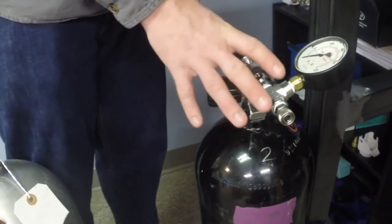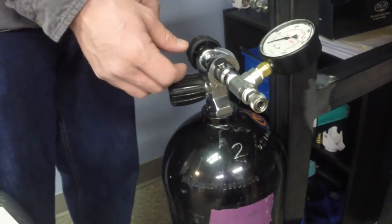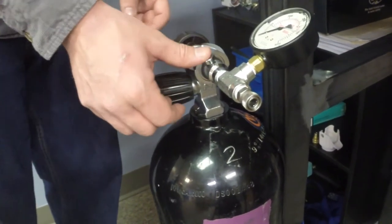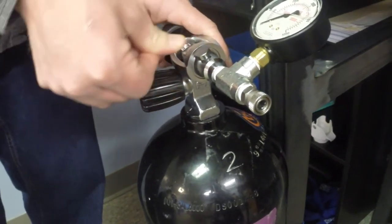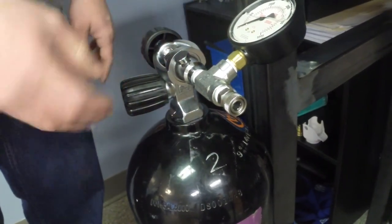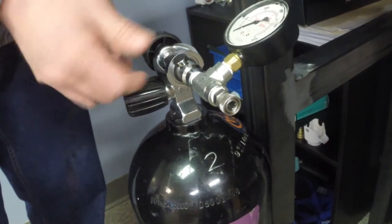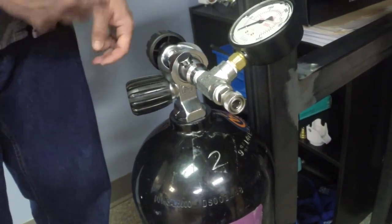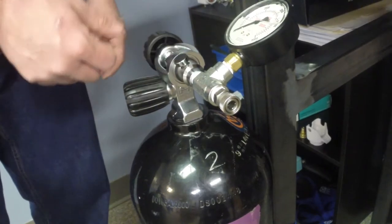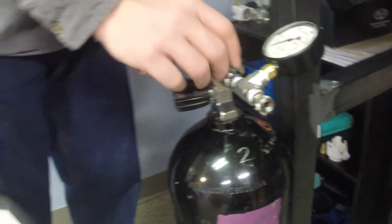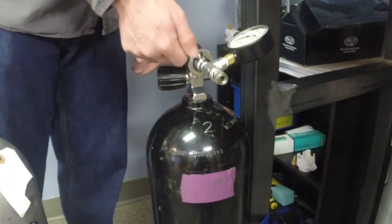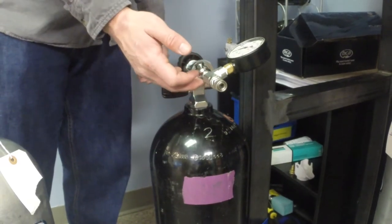On some of these adapters, what we have here is the bleed valve that we just push. So we are able to bleed the line by pushing down. Some other adapters have a screw mechanism. So before you fill, you're going to want to make sure if you do have one of those bleed valves, that it's tightened down in order to have the line hold pressure.